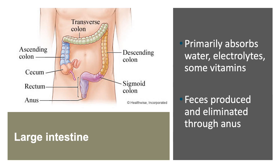The large intestine will receive a semi-fluid mass from the small intestine and convert that to feces, primarily through the absorption of water. We'll also see the absorption of some electrolytes and some vitamins — specifically vitamins B and K, which are made by bacteria within the large intestine. These probiotic bacteria, members of the gut microbiota, synthesize vitamin K and most water-soluble B vitamins. Finally, feces are eliminated through the anus.